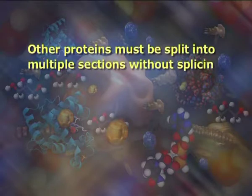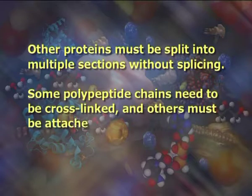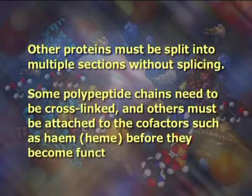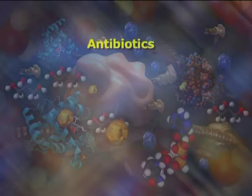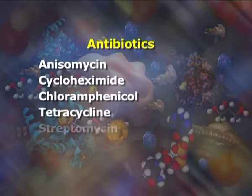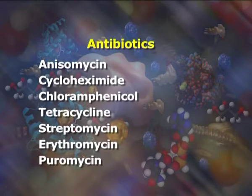The mRNA does not contain all the information for specifying the nature of the mature protein; the nascent polypeptide chain released from the ribosome commonly requires additional processing. The correct folding process is complex and vitally important. For most proteins, it requires chaperone proteins to control the form of the product. Some proteins excise internal segments from their own peptide chains, splicing the free ends — the discarded sections are called intins. Other proteins must be split into multiple sections without splicing. Some polypeptide chains need to be cross-linked, and others must be attached to cofactors such as heme before they become functional. Translation can be inhibited by antibiotics such as anisomycin, cycloheximide, chloramphenicol, tetracycline, streptomycin, erythromycin, and puromycin.